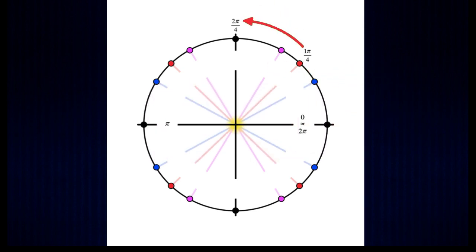The next angle is two pi over four, three pi over four, four pi over four, five pi over four, six pi over four, seven pi over four, and finally eight pi over four.